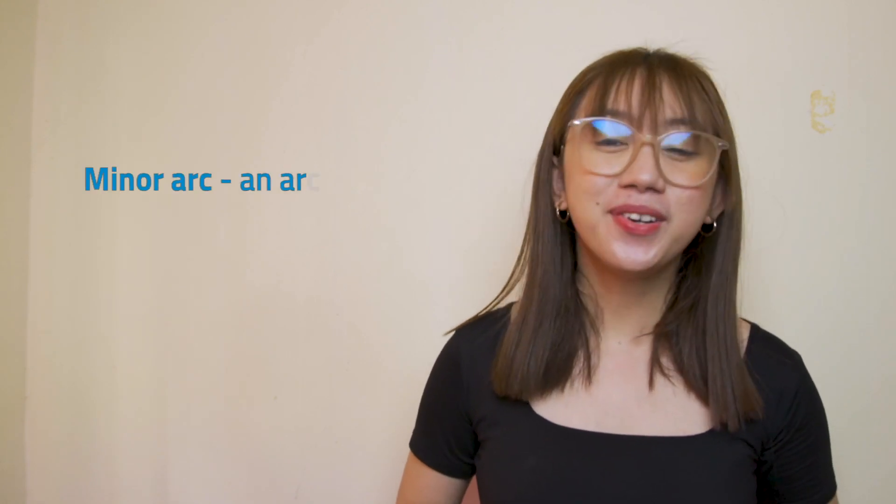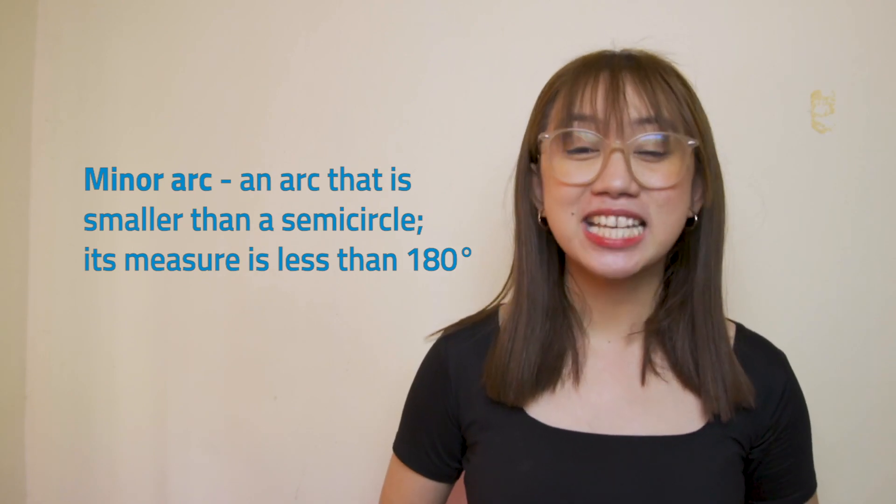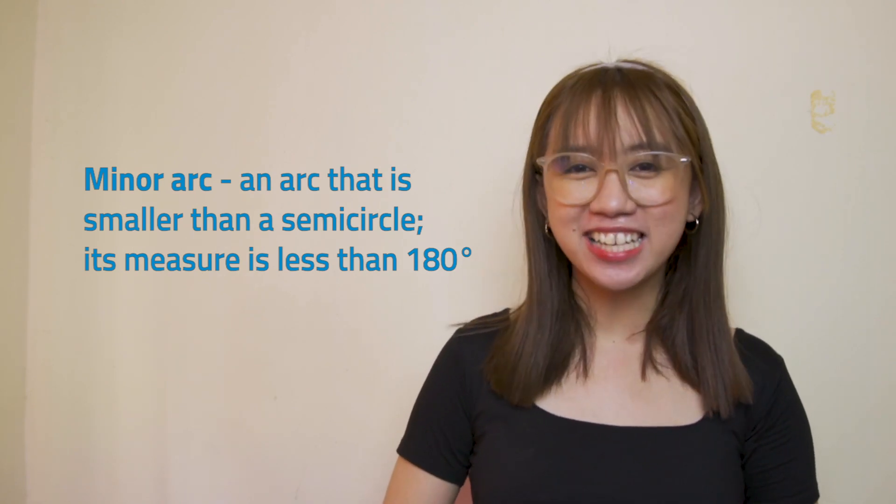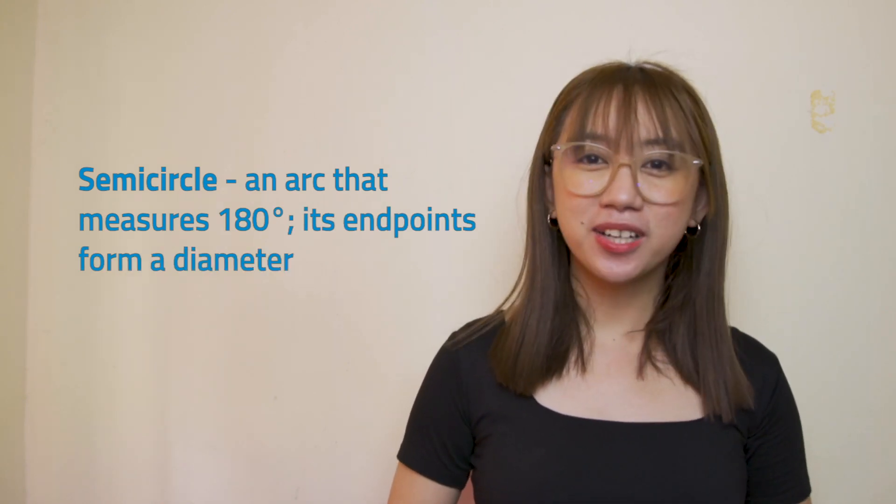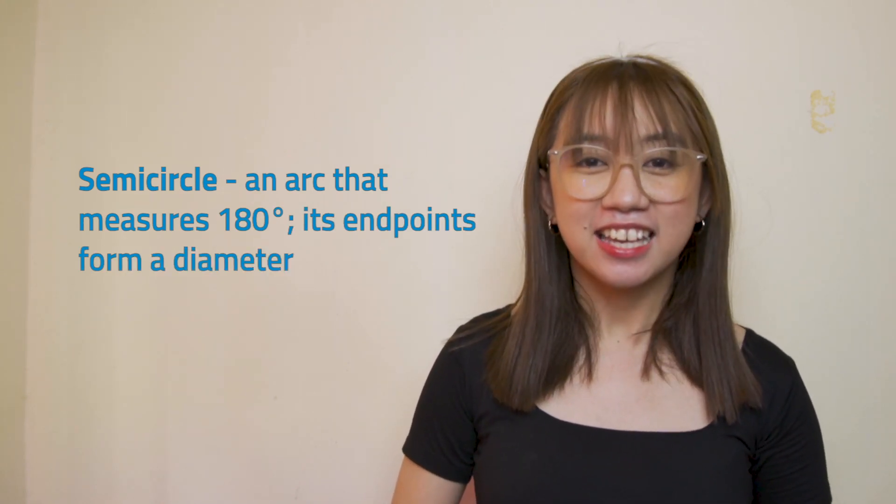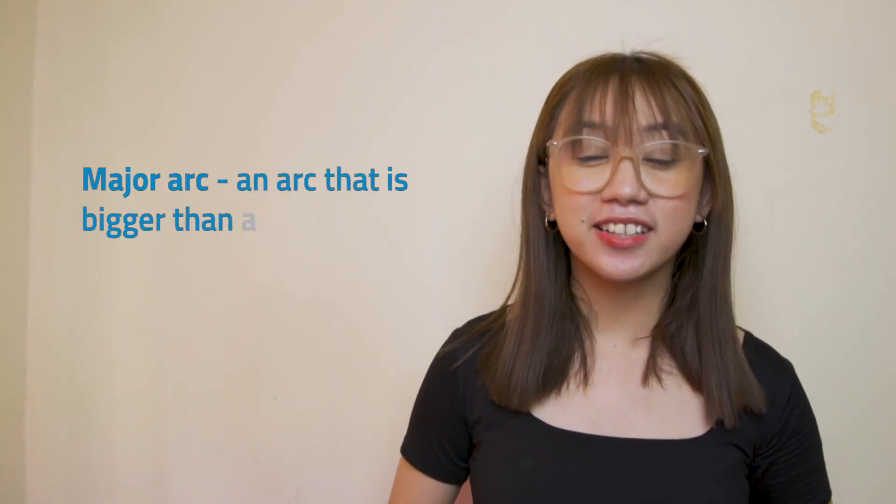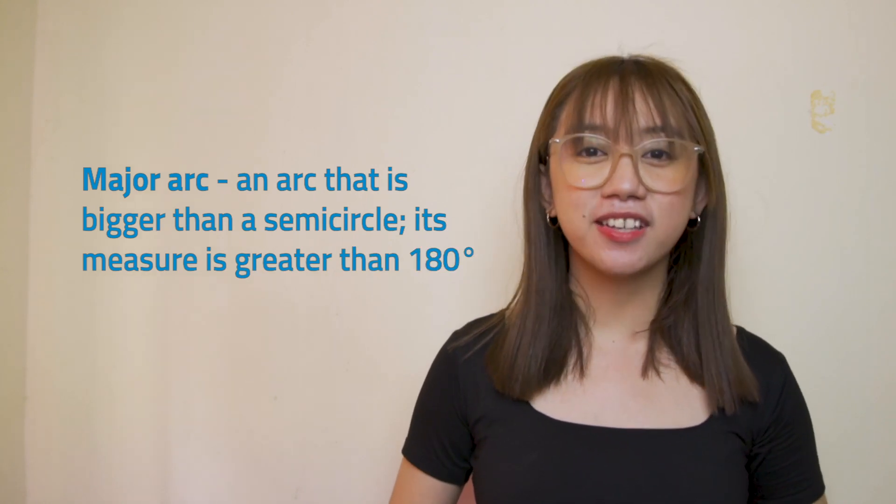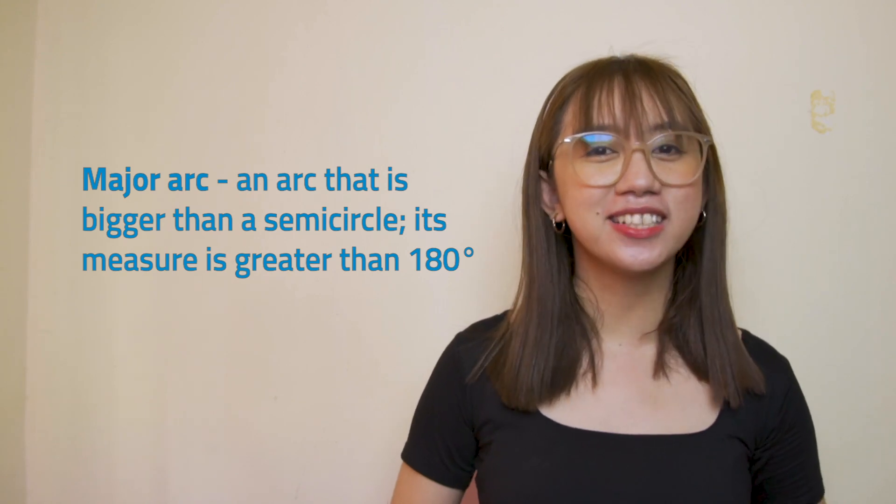We can further classify an arc as a minor arc, semicircle, or a major arc. A minor arc is an arc that is smaller than a semicircle. Its measure is less than 180 degrees. A semicircle is an arc that measures 180 degrees. Its endpoints form a diameter. A major arc is an arc that is bigger than a semicircle. Its measure is greater than 180 degrees.